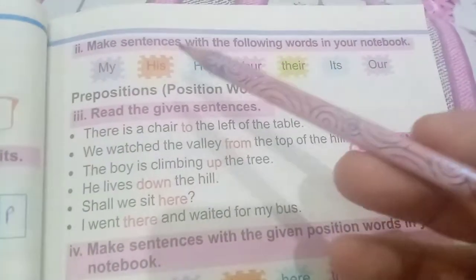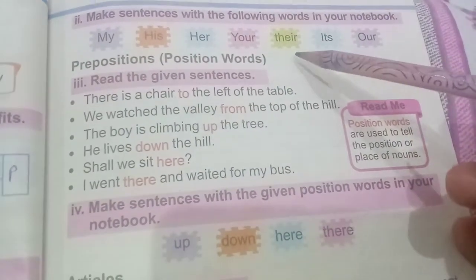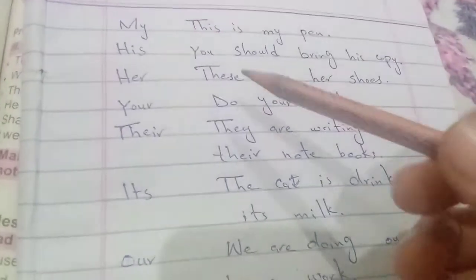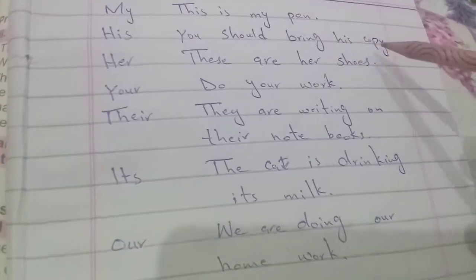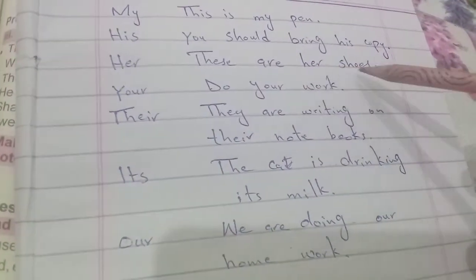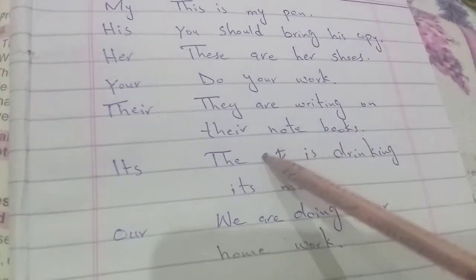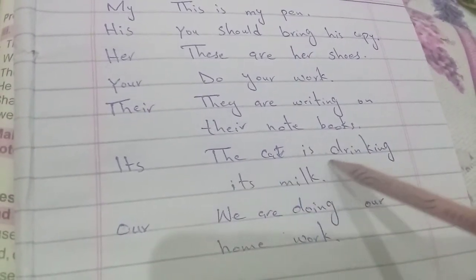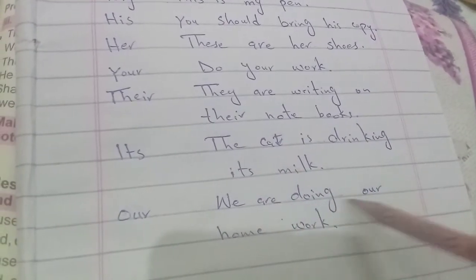Make sentences with the following words in your notebook: my, his, her, your, their, its, our. My — this is my pen. His — you should bring his copy. Her — these are her shoes. Your — do your work. Their — they are writing on their notebooks. Its — the cat is drinking its milk. Our — we are doing our homework.